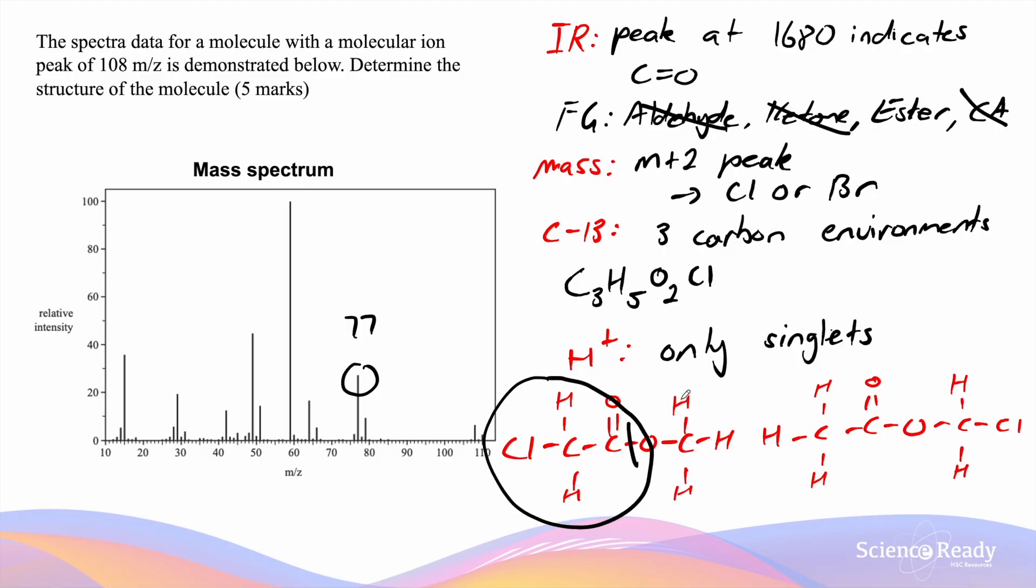The other fragment that would be formed is CH3O. CH3O has a molar mass of 31 which we can see a small but albeit present signal over here on the mass spectrum.